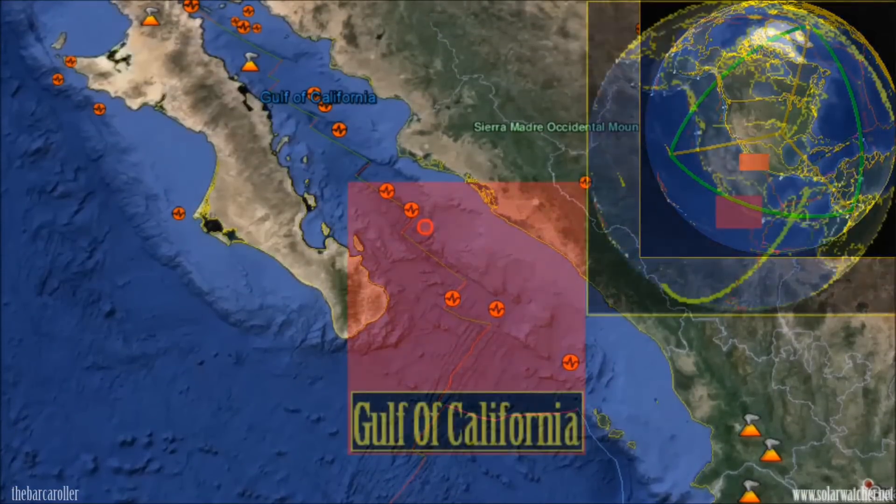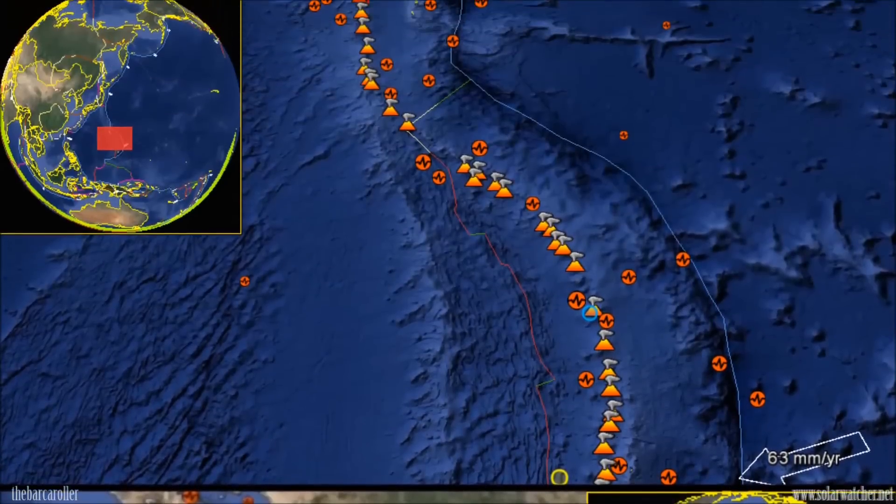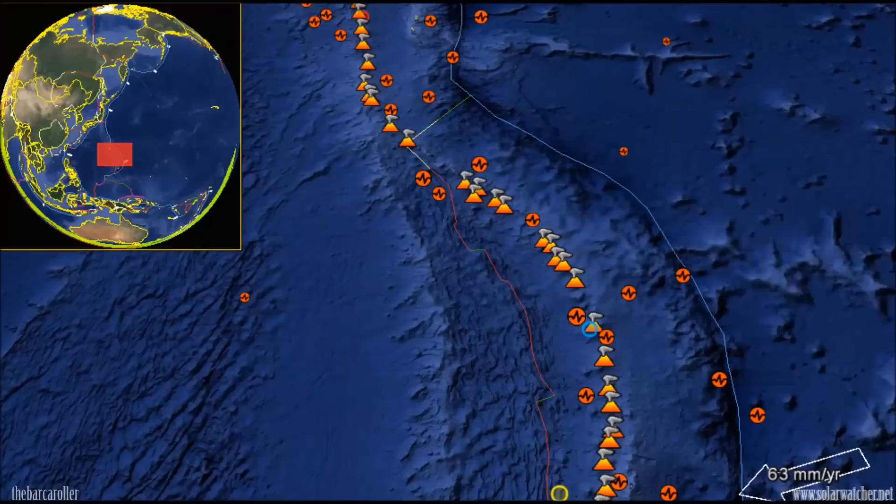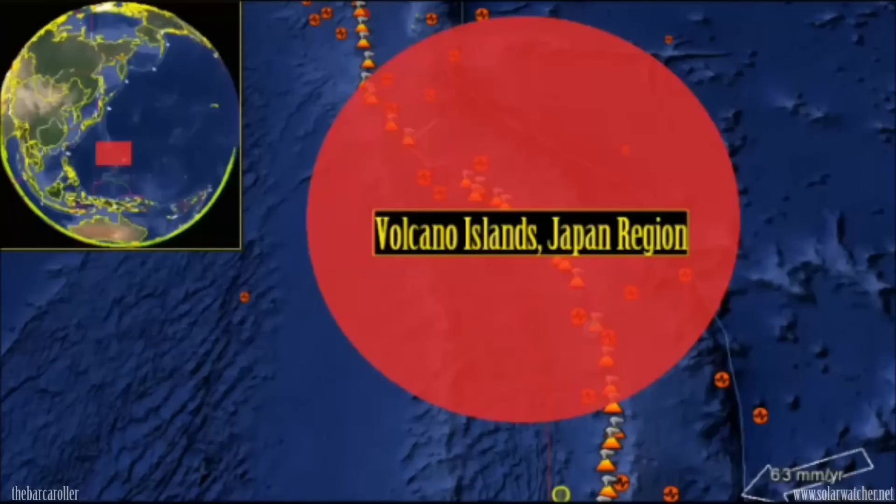Across the Pacific, the third area of concern would be the Gulf of California. The final area of concern for this potential 6.8 magnitude earthquake from 20 to 26 degrees north latitude will be the Volcano Islands, Japan region, just on the eastern side of the Philippine plate.